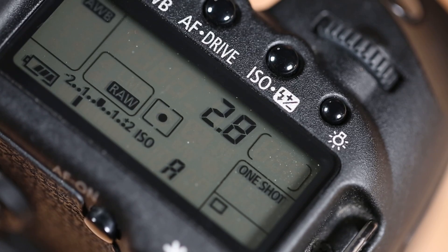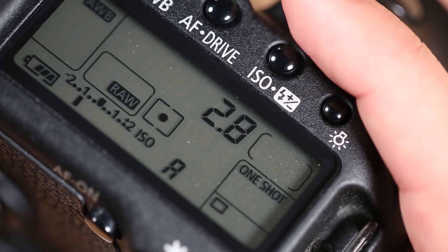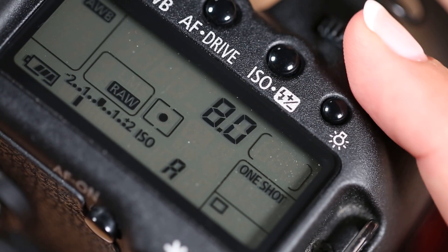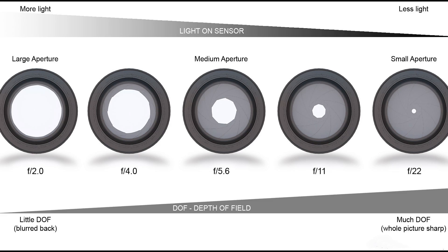To change the aperture on your camera, increase or decrease the f-stops. The unique thing about f-stops is that the lower the number, the more light is let into the camera. For instance, an f-stop of 2.8 actually lets in way more light than an f-stop of 8. You can see this chart shows some common f-stops and how much light they let in.